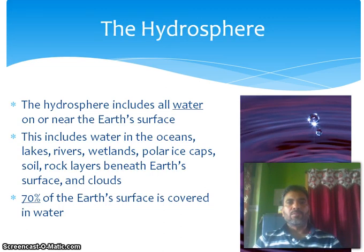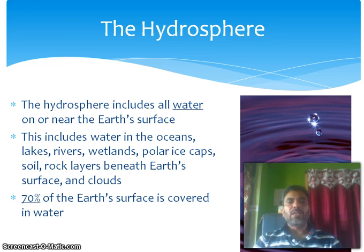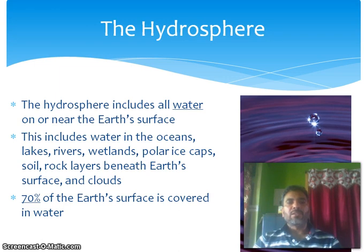The hydrosphere includes all water on or near the earth's surface. This includes water in the oceans, lakes, rivers, wetlands, polar ice caps, soil, rock layers beneath earth's surface, and clouds.